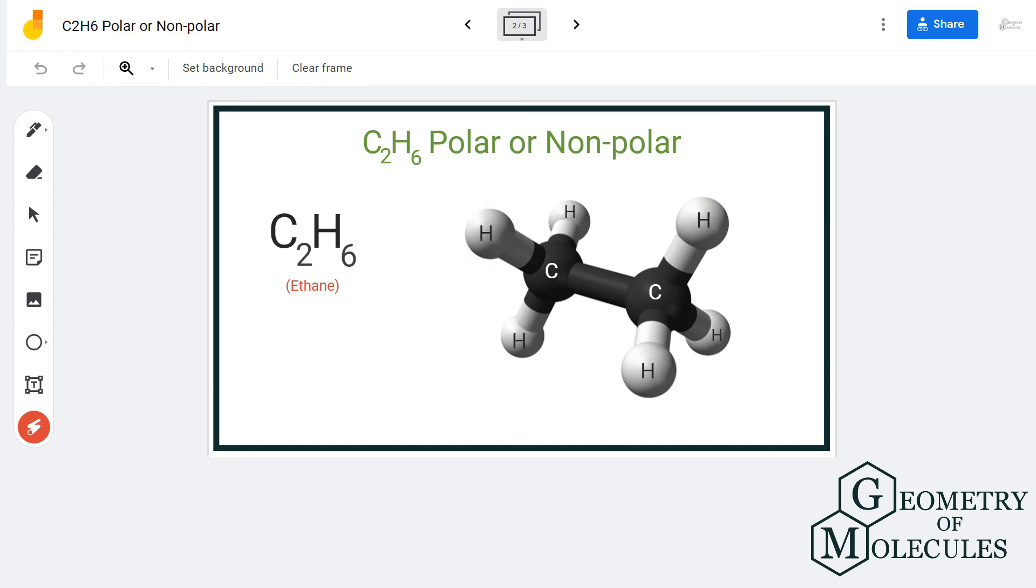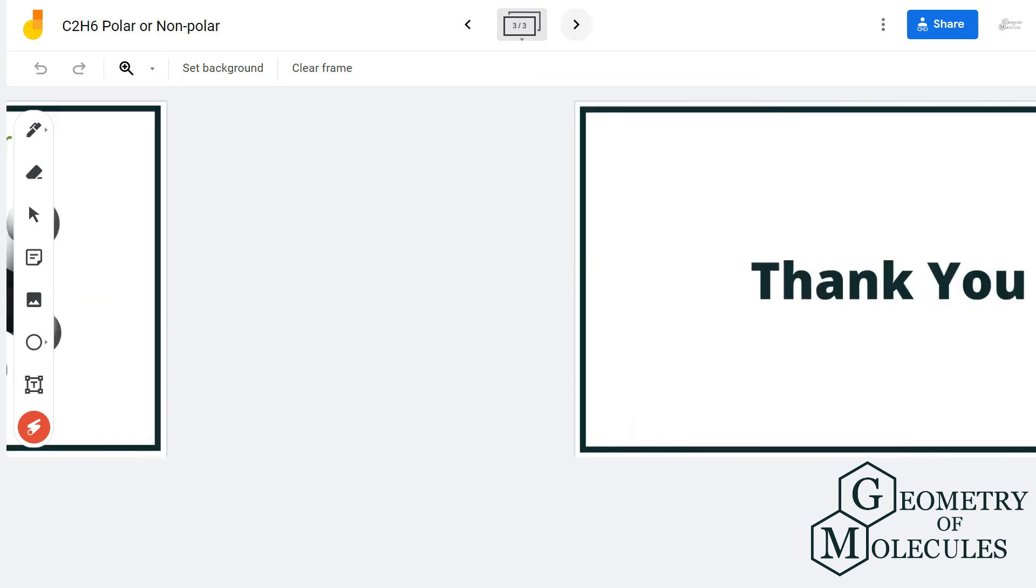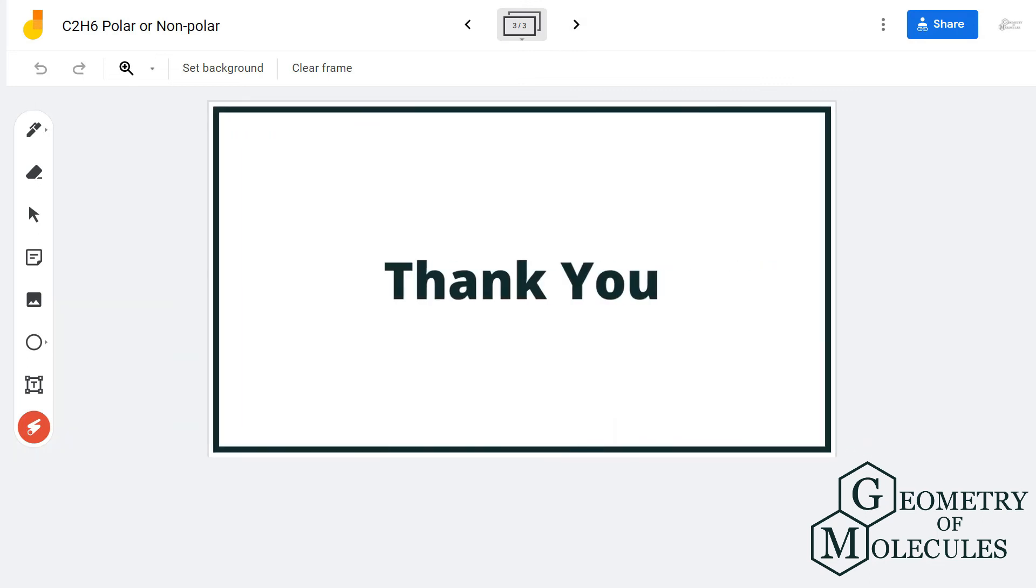This means that there are no formation of poles in these molecules. And as there are no poles in these molecules, C2H6 is a non-polar molecule. For more videos on Lewis structure, molecular geometry, and polarity of molecules, subscribe to our channel.